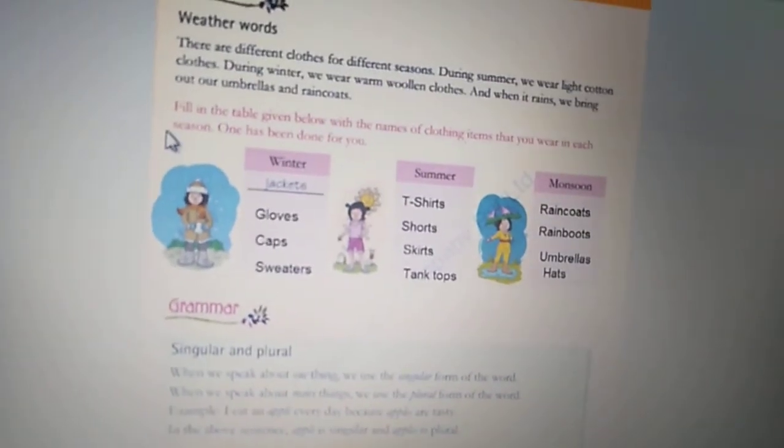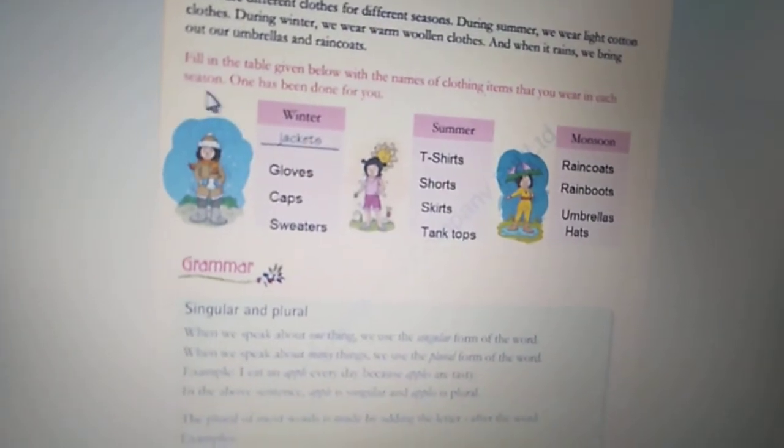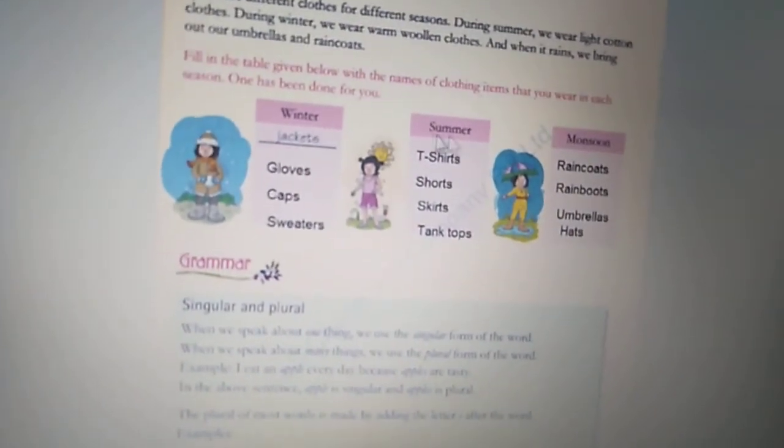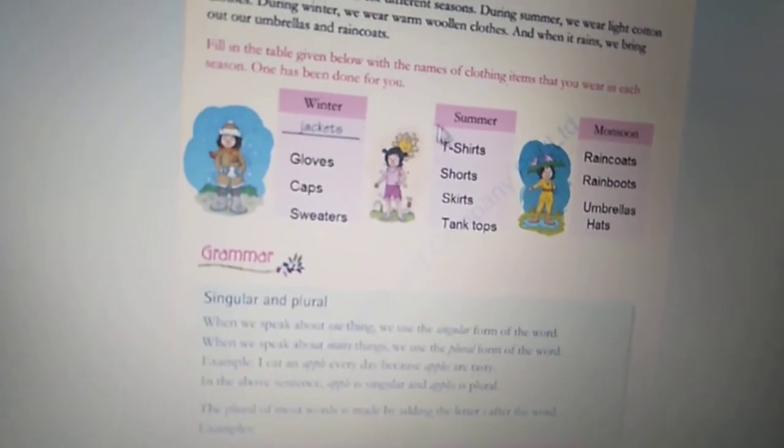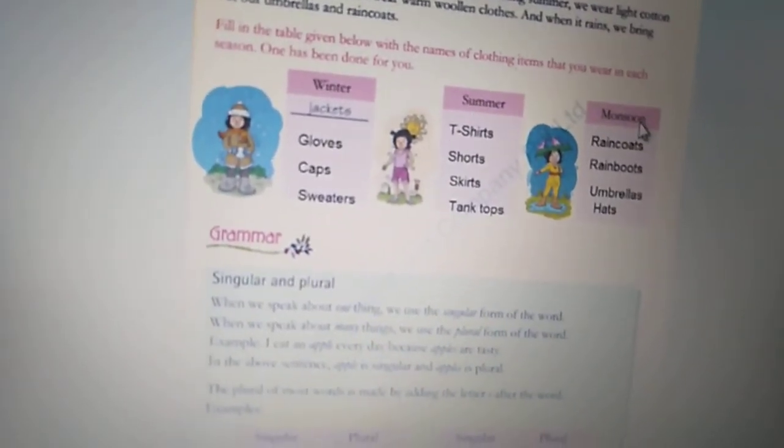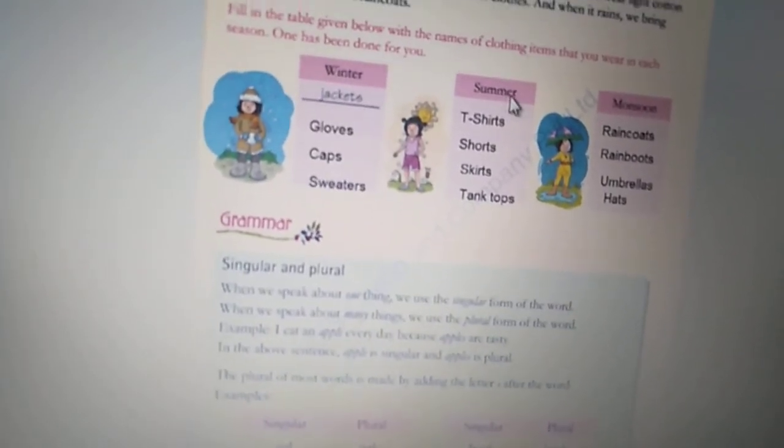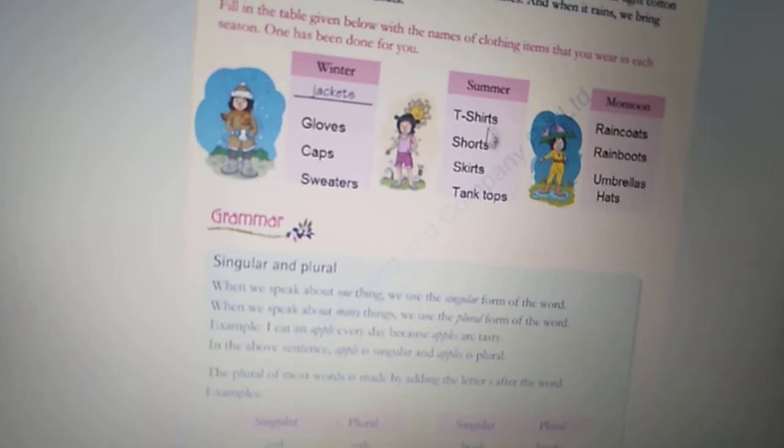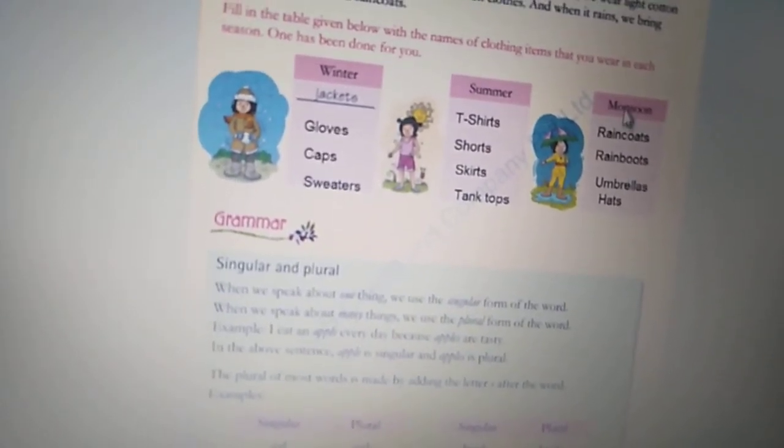Fill in the table given below with the names of clothing items that you wear in each season. Here are three different seasons. Three seasons ke name diyye gaya hai. Winter, summer and monsoon. Winter season mein hum kawansi kapdai pehnte hai? Hum aapne yehaa pehne hai. Summers and monsoon mein hum kawansi kapdai pehnte hai? Woh hum aapne yehaa pehne hai.